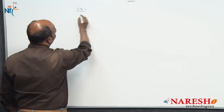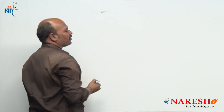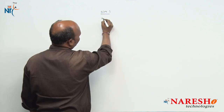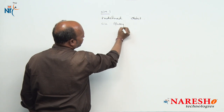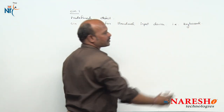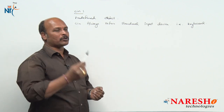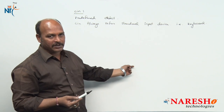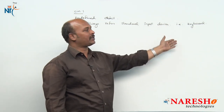Now I am going to explain the syntax of Cin and how it works. First, Cin is a predefined object. Cin always refers to the standard input device, that is the keyboard. Just as scanf is used for input in C, Cin is also used for input in C++. That is why Cin always refers to the standard input device, which is the keyboard.